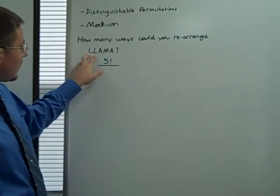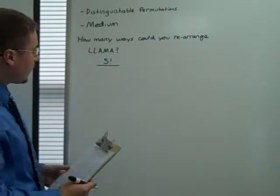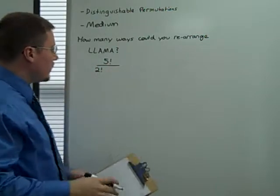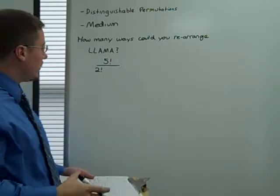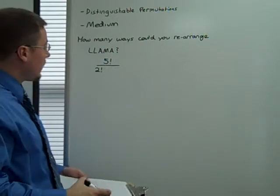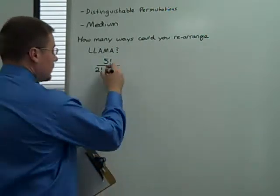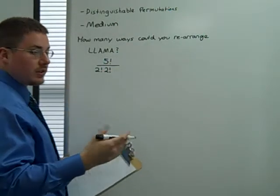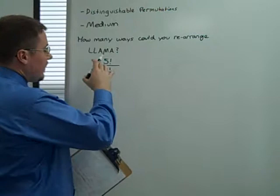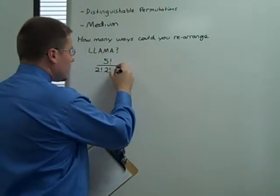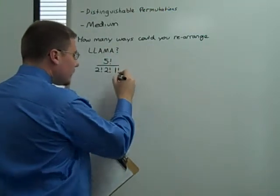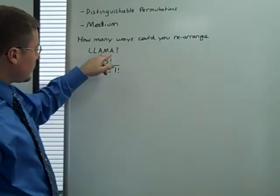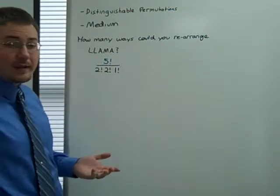So, L appears twice, so there are 2 factorial ways that we could cancel out the letter L. Now, A also appears two times, for a similar line of reasoning. M appears once, so you give it a 1 factorial. Normally I wouldn't write that, but just so you can see: two letters, two letters, one letter. One factorial is one, so it doesn't really have much of an effect.